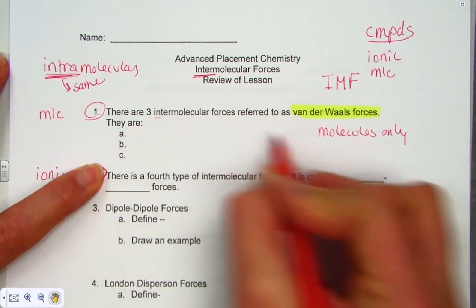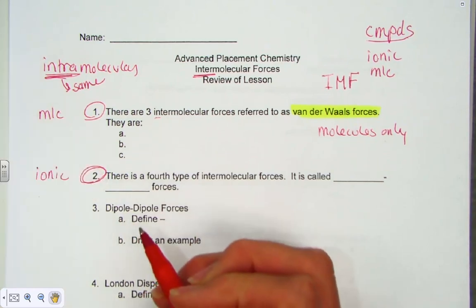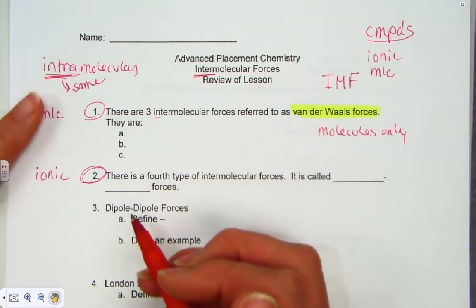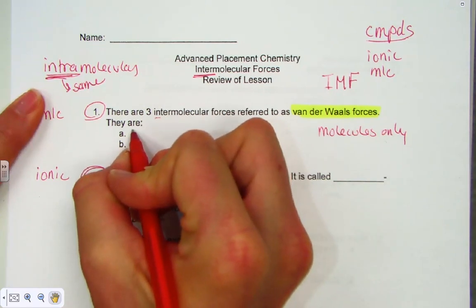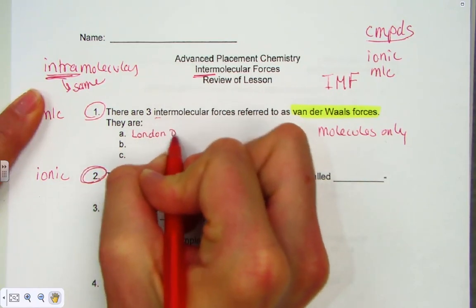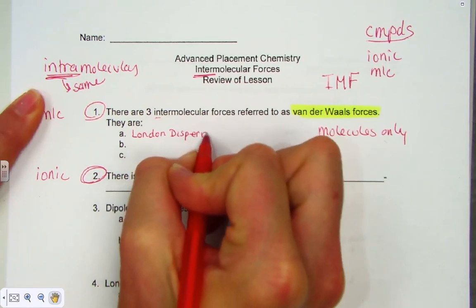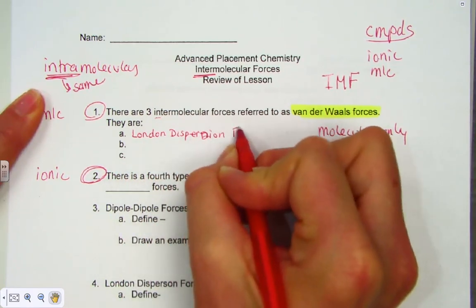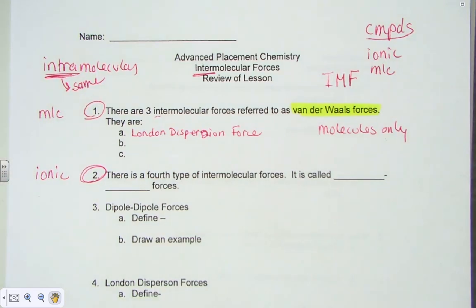The three categories of intermolecular forces that apply to molecules are listed here in order of increasing strength. The weakest of all is called the London dispersion force — sometimes just called dispersion force. London is actually a person's name, not the city. London dispersion forces exist between all molecules, whether polar or nonpolar. Every molecule has a London dispersion force, but it is the weakest of the three intermolecular attractions.